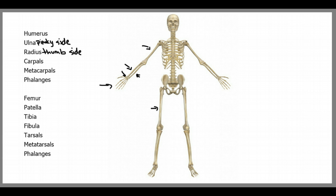The femur is the thigh bone. The patella is the kneecap. The tibia is on the big toe side, which is this bone. And the fibula is on the pinky toe side, which is this bone. The tarsals, metatarsals, and the toes are also called phalanges.